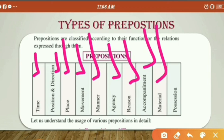Then prepositions of material — as the name suggests, when the material of something is highlighted, such as what something is made of. And then prepositions of possession, which deal with ownership or belonging.